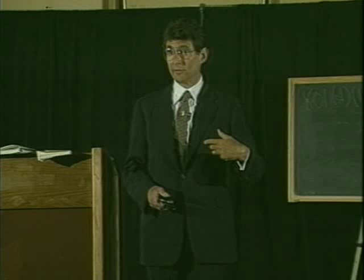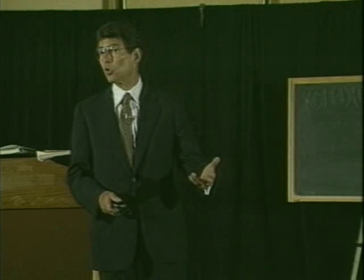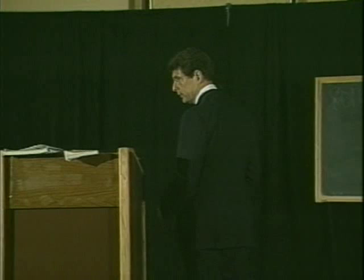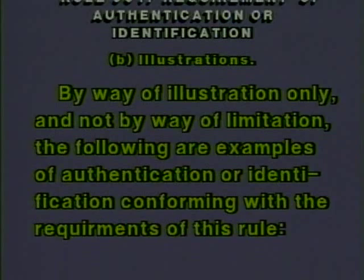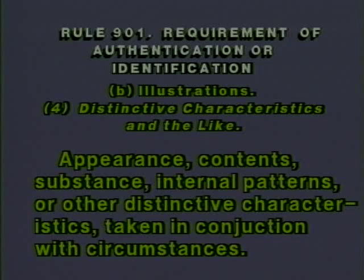Because we're doing the wrong rules. Take a look for a moment at Rule 901(b)(4). What does 901(b)(4) say? By way of illustration only and not by way of limitation, the following are examples of authentication or identification conforming with the requirements of this rule. Four says: distinctive characteristics and the like — appearance, contents, substance, internal patterns, or other distinctive characteristics taken in conjunction with circumstances.